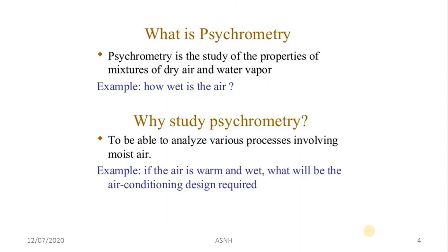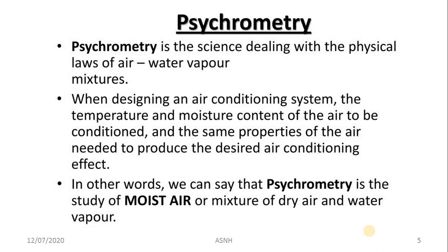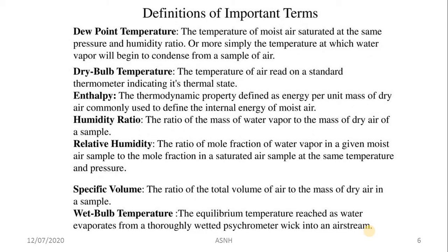Psychrometry is the term related to air conditioning and it deals with the study of moist air. Dry air is air with no wet contaminants, while moist air contains some wet contaminants. Psychrometry is the science dealing with the physical laws of air-water vapor mixtures — in other words, the study of the mixture of dry air and water vapor.